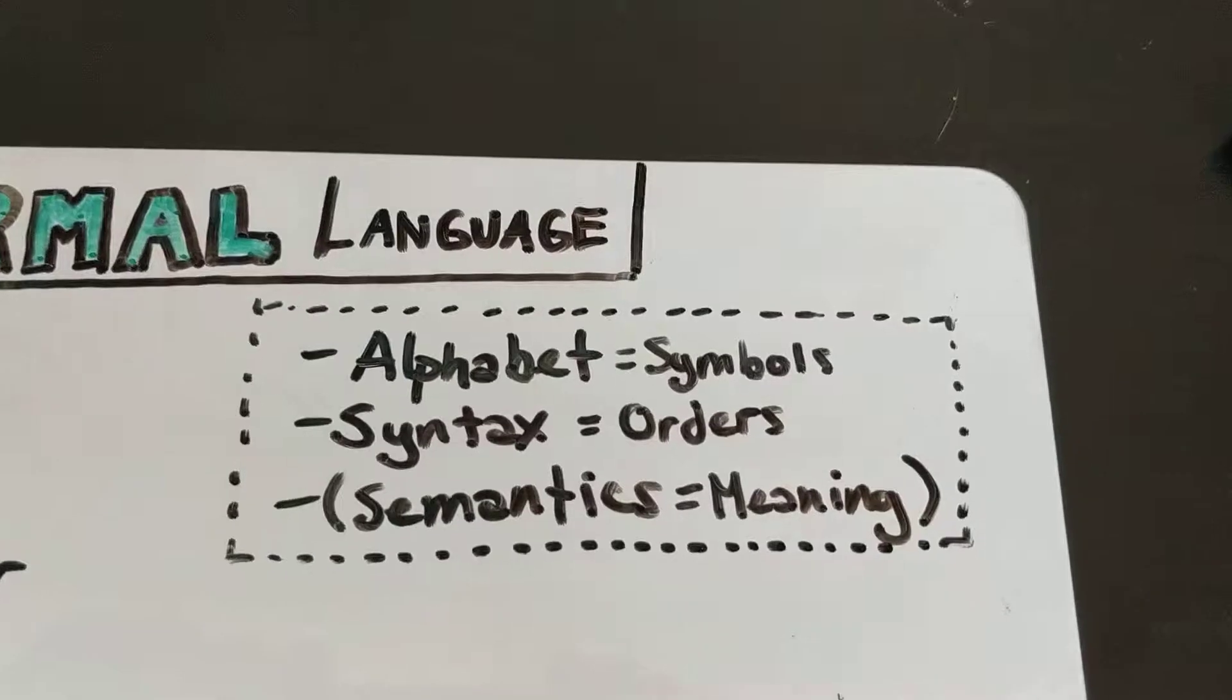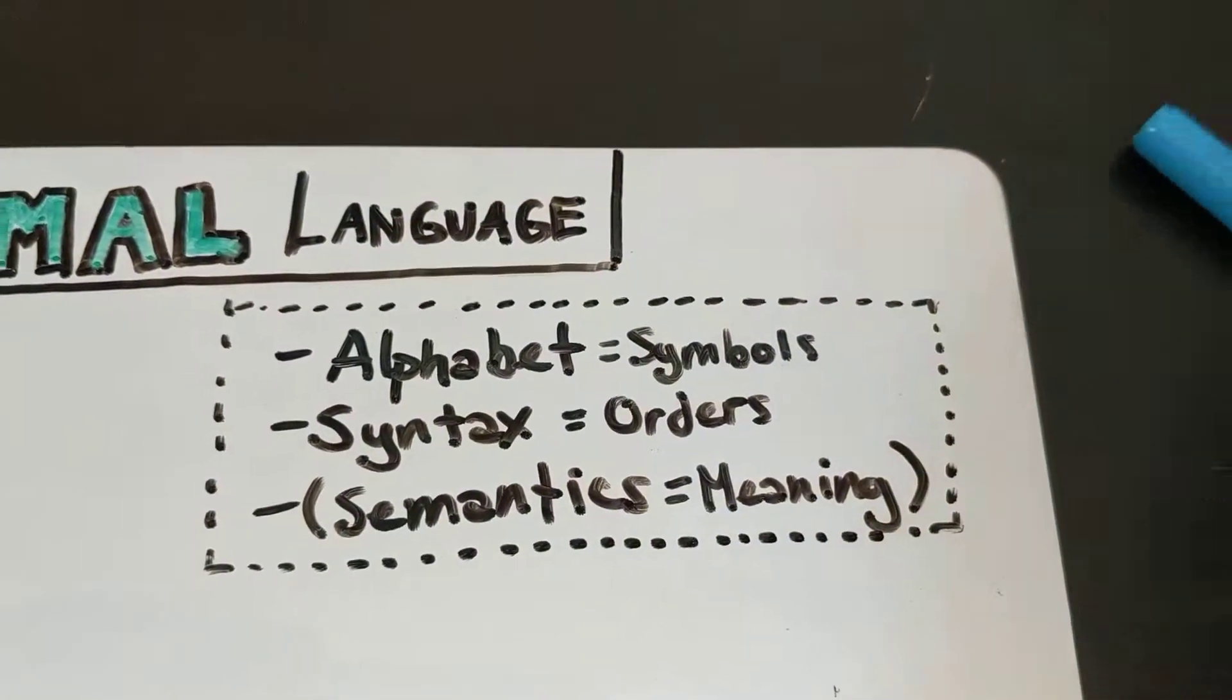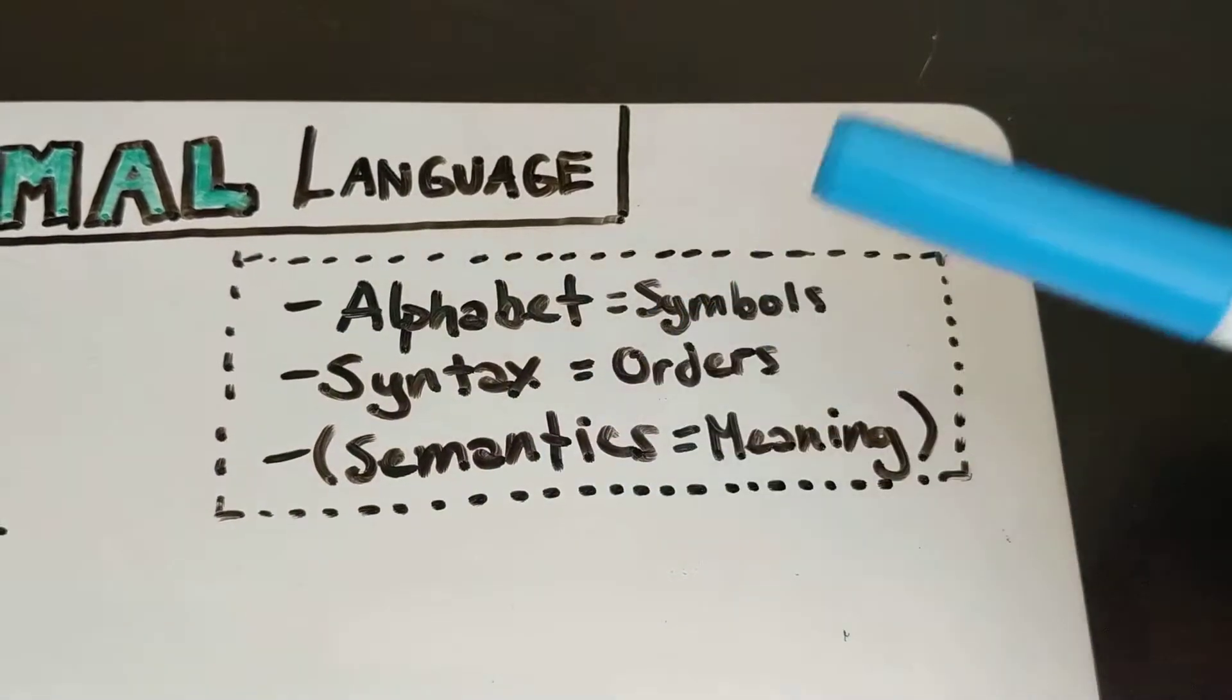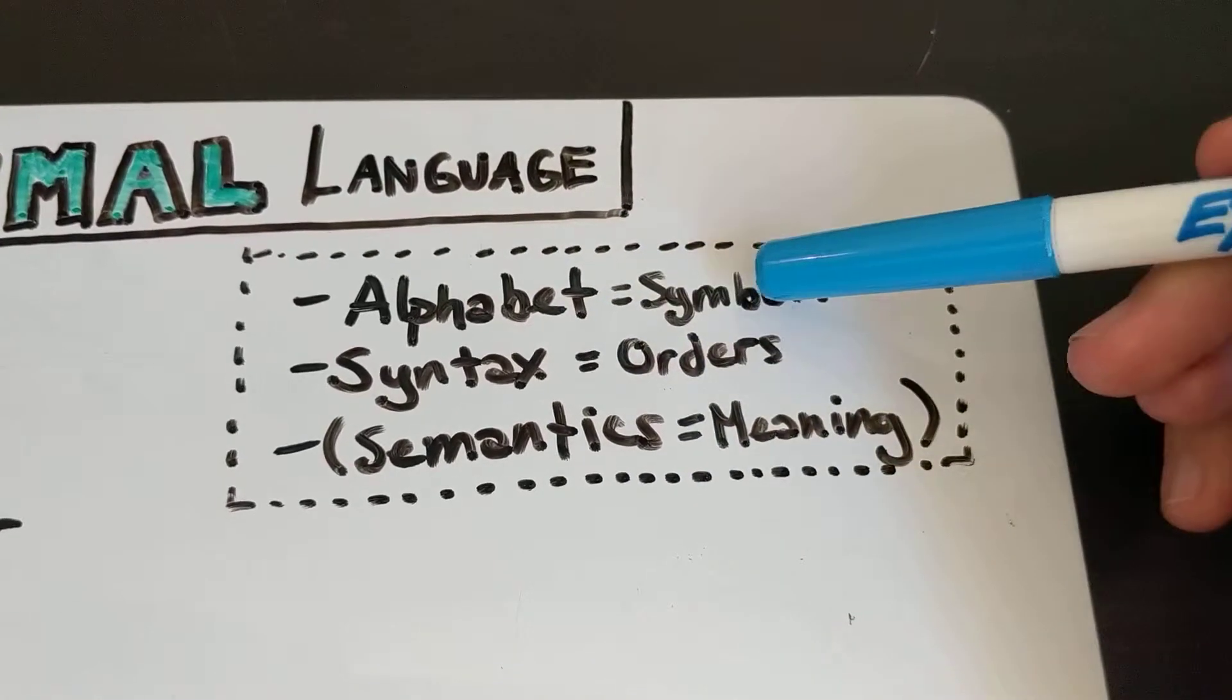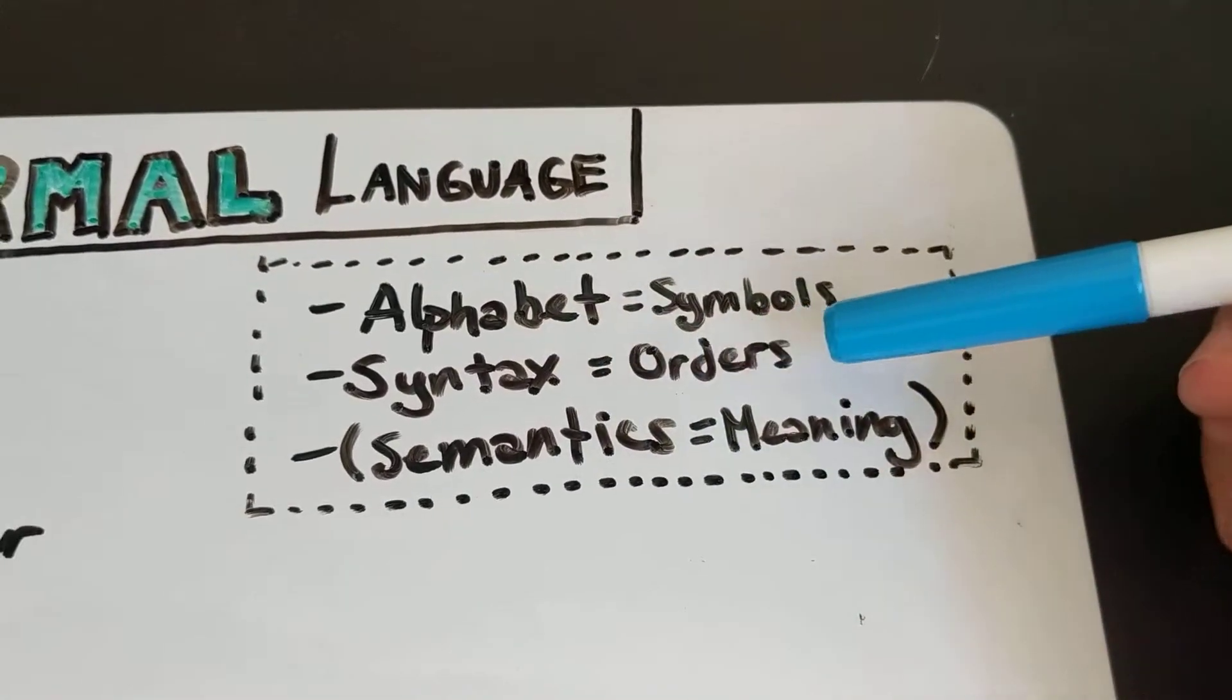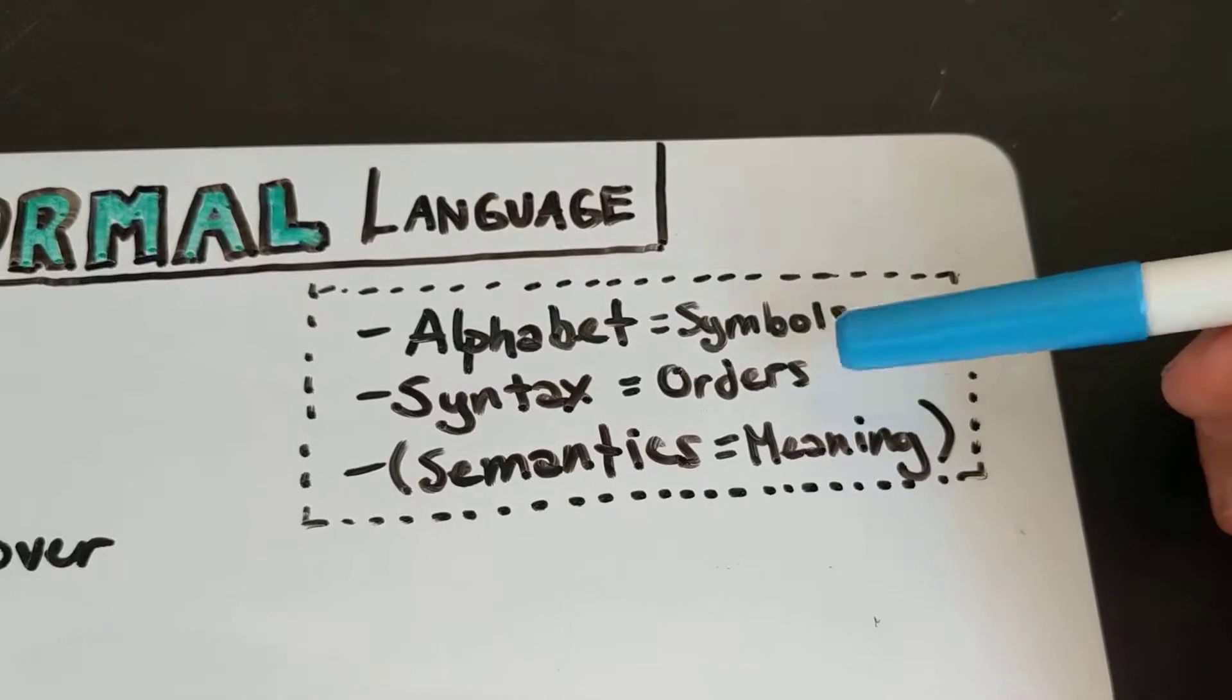In some of the previous videos that I've posted here, particularly the ones about logic, we've talked about the notion of a formal version of the language in these terms, where a formal language has an alphabet, which is a set of symbols that you can draw from, a syntax, which tells you about what orders you can place those symbols in.